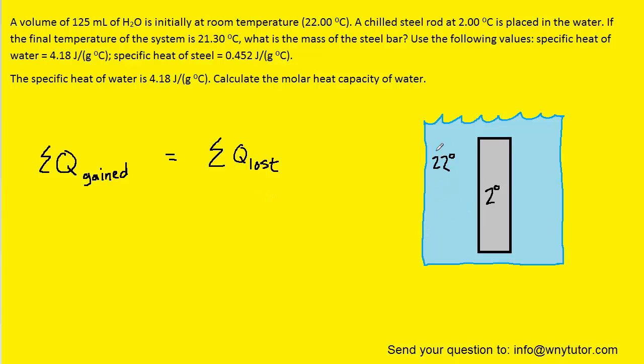We were told that the water has a temperature of 22 degrees Celsius and the steel rod is 2 degrees Celsius. We know that heat will always travel from the warmer object to the cooler object—from the object whose temperature is higher to the object whose temperature is lower. So we can see that because the water has a higher temperature, heat will flow from the water to the steel rod. That means the steel rod is gaining heat energy while the water will be losing heat energy.